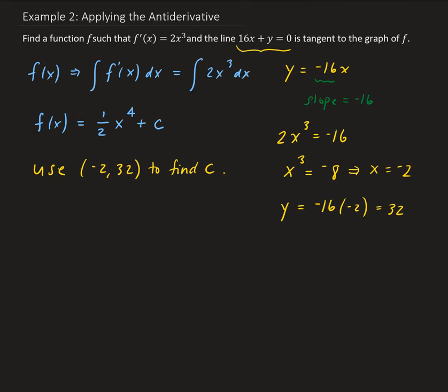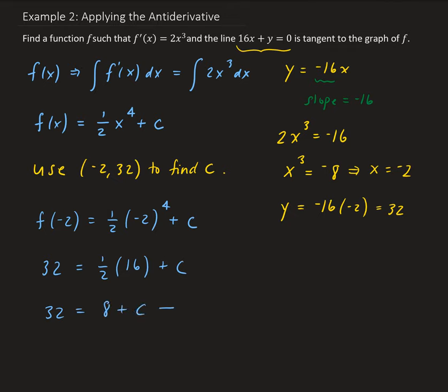We have f of x equals one half x to the 4 plus C. So f of minus 2 equals one half times minus 2 to the 4th power plus C. Since f of minus 2 is 32, we have 32 equals 16 over 2, which is 8, plus C. So C is going to be 32 minus 8, which is 24.